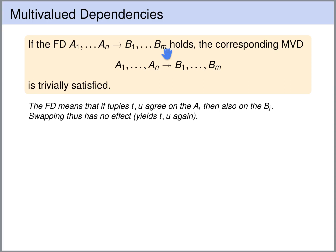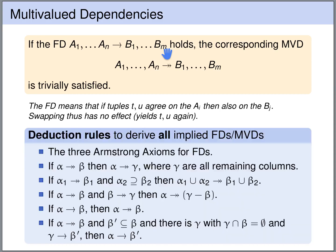We can reason about multivalued dependencies like we did for functional dependencies. For functional dependencies we saw that we can determine whether dependencies are implied using the Armstrong axioms. For multivalued dependencies there is a generalization of the Armstrong axioms, though we will not look at them in detail in this course.